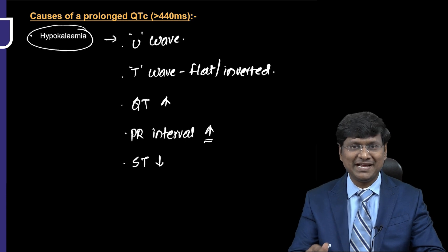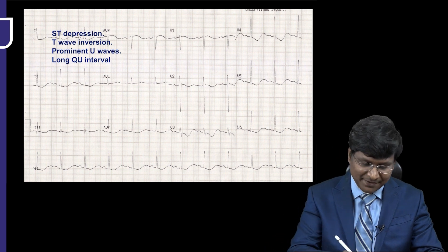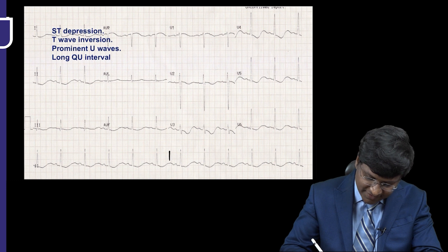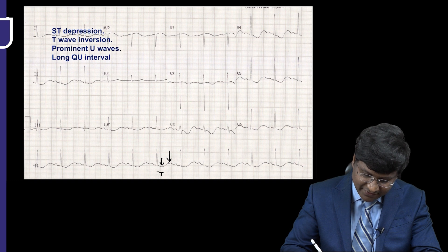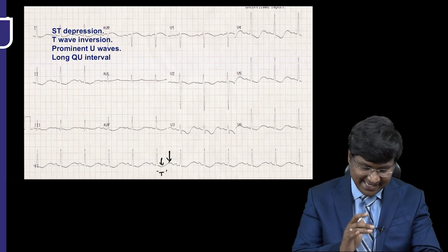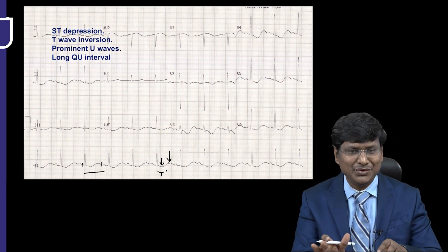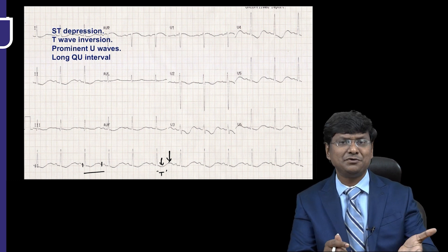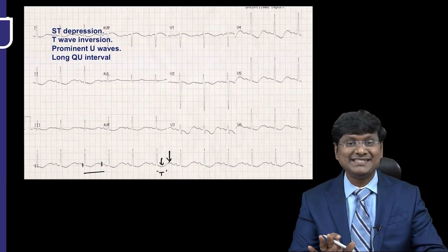Another ECG change in hypocalcemia is the presence of ST segment depression. This is the ECG of hypocalcemia — you can appreciate all the findings: the appearance of the U wave, T wave inversion, and prolonged QT interval. The PR prolongation becomes more evident as the severity of hypocalcemia increases.